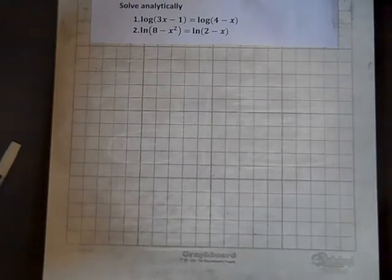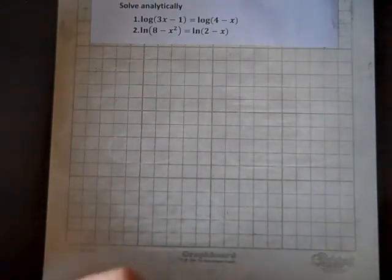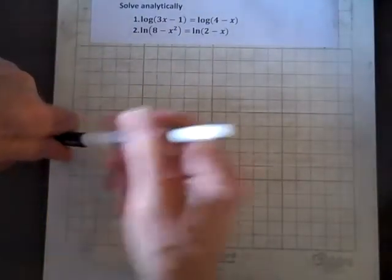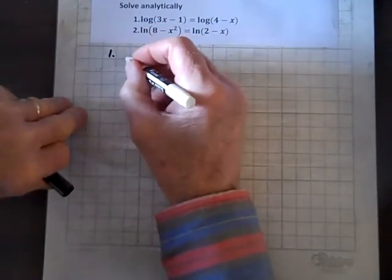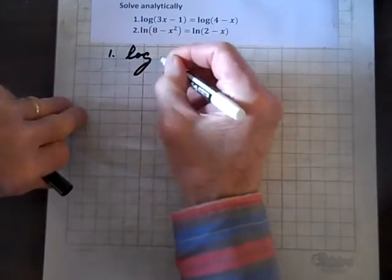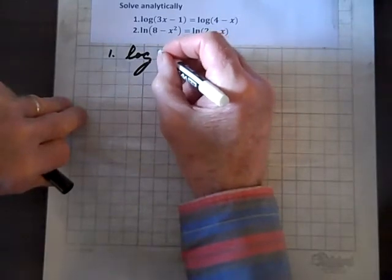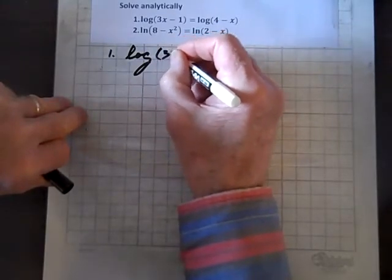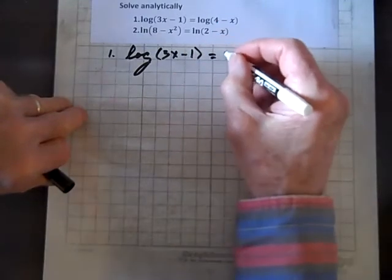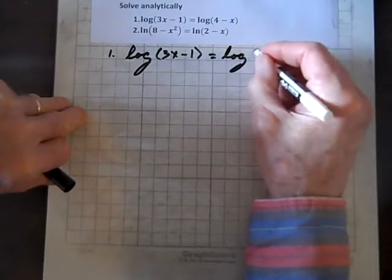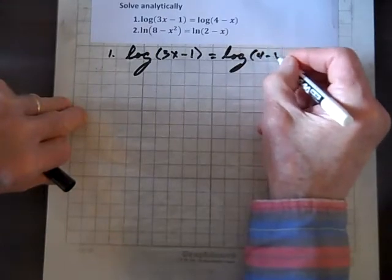Well, here we have a couple of logarithmic equations to solve, so let's get started. So number 1, log, and that's the common log because there's no base showing, so the understood base is 10, common log of 3x minus 1 equals log of 4 minus x.